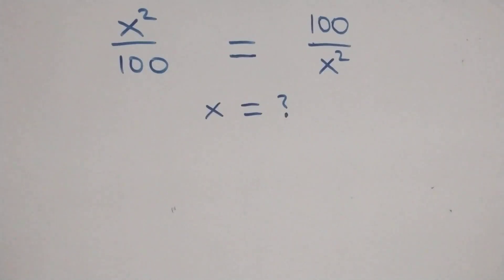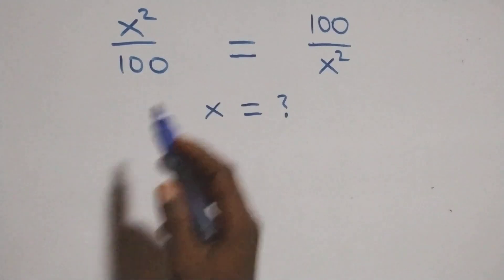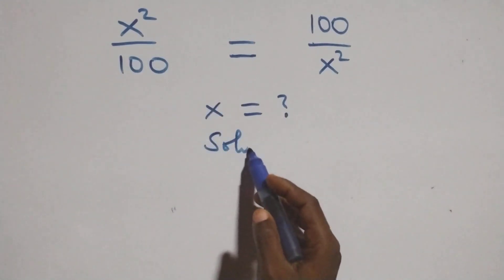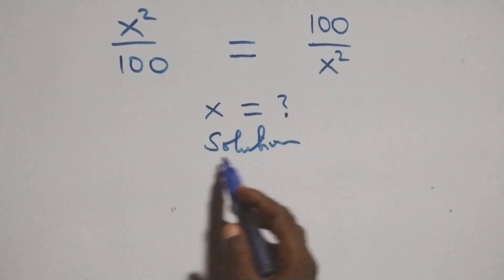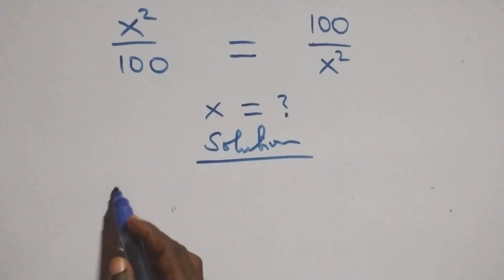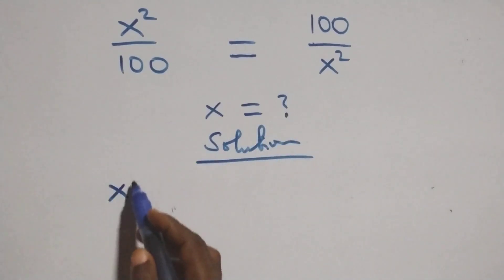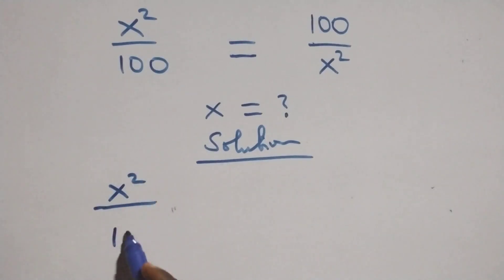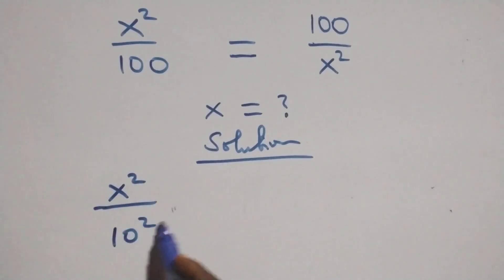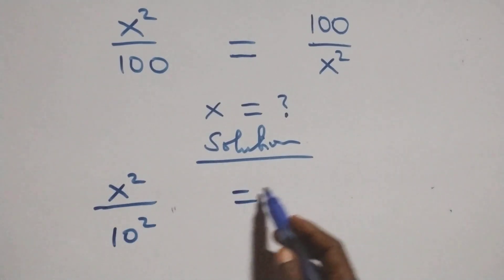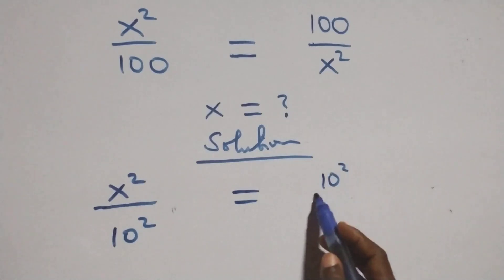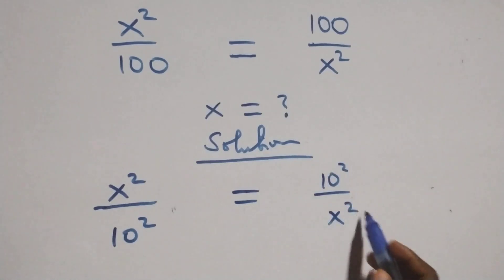Hello, you're welcome. I want to solve this nice exponential equation. From what we have here, we can write x squared over 100 as 10 times 10, which is 10 squared. So 10 squared also equals 10 squared over x squared. The next step here,